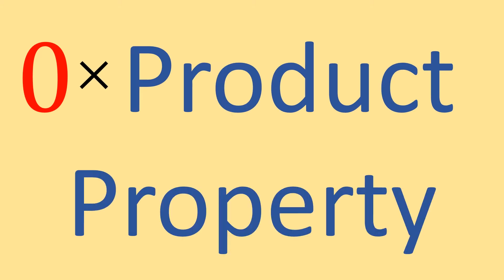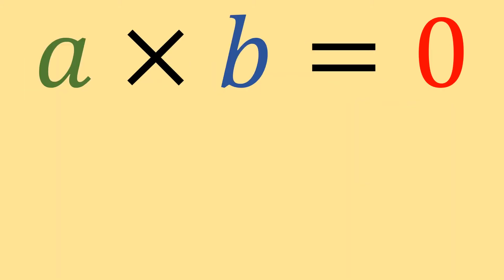Zero product property. Let's consider the equation a times b equals zero, where a is just some number and b is another number.